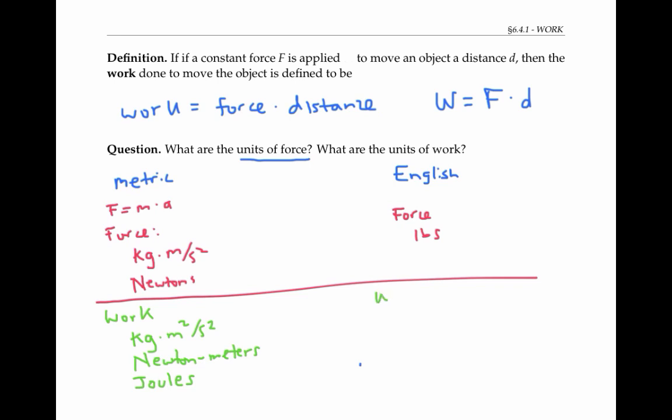If we're using English units for work, work again is force times distance. So the units become pounds times feet, or usually this is written instead as a foot pound.